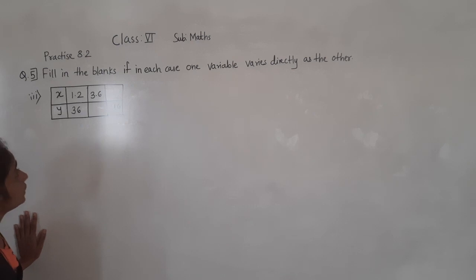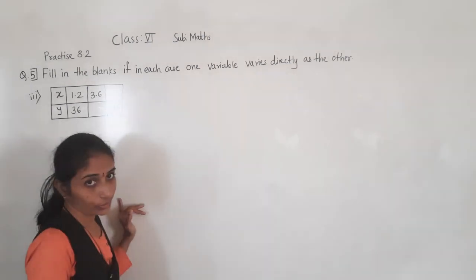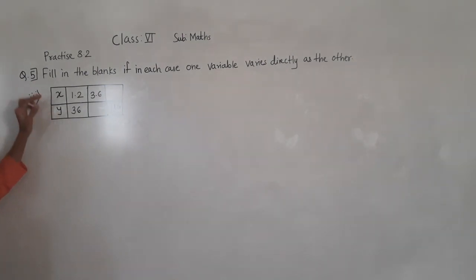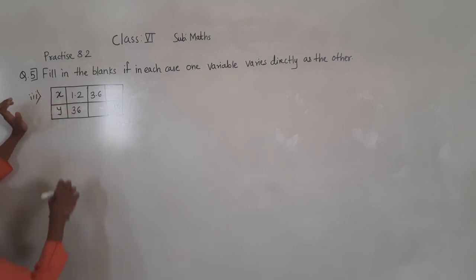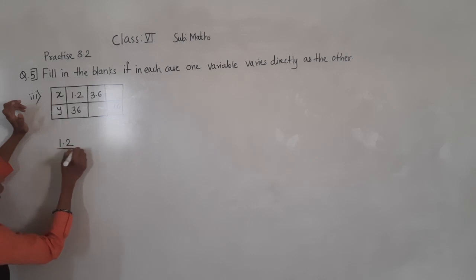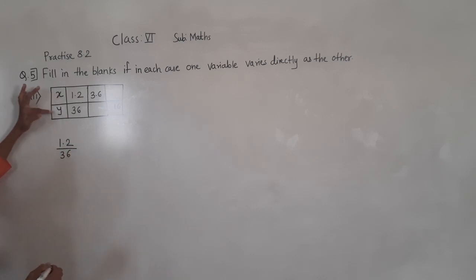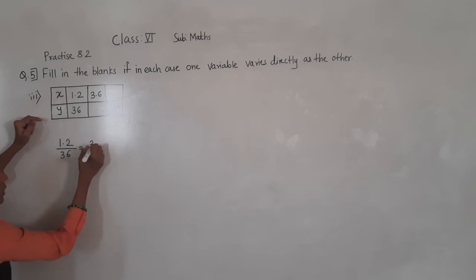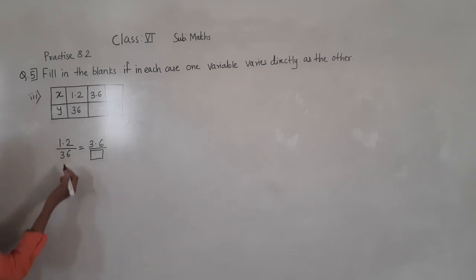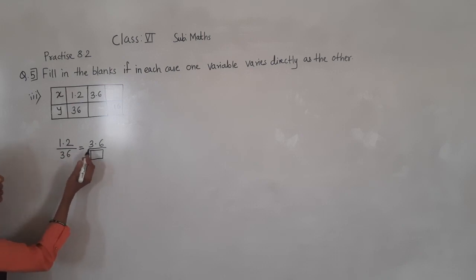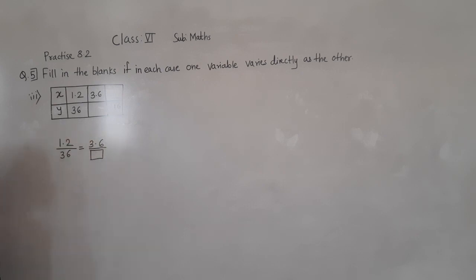Question number 5, fill in the blanks: if in each case one variable varies directly as the other. Now see here x is to y, meaning x upon y. What is given: 1.2 upon 36. Next is 3.6 upon blank box. Now without the decimal point, 1.2 is 12 and 36 is 36. We know 12 is a factor of 36.